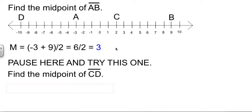I'm going to ask you again to pause your video. Find the midpoint of segment CD, come back, check your result. The two points are at negative 10 and 2. 2 and negative 10, when you average those out, you get negative 4.